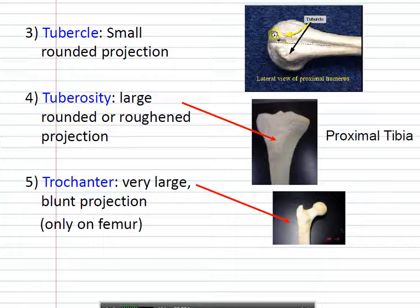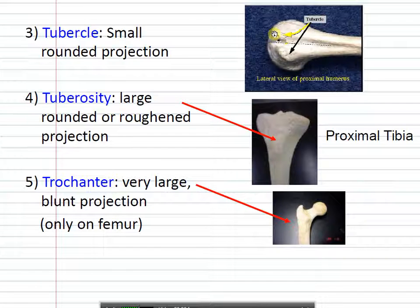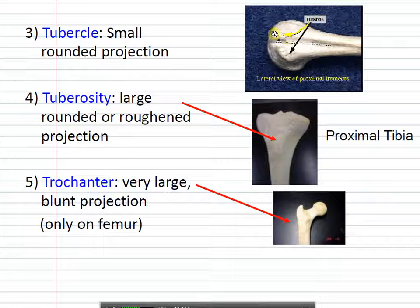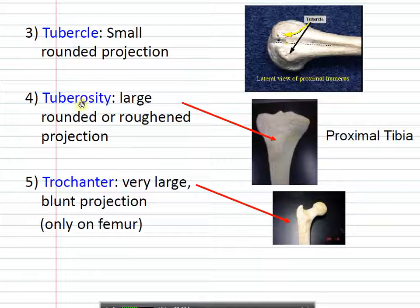The trochanter you only find on the femur. You can actually feel it through your own body — if you take your hand and put it at your hip, then pivot your leg a little bit, that piece of bone that moves is the greater trochanter in your femur. To summarize: tubercles are smaller, tuberosities are larger, and trochanters are only found on the femur.